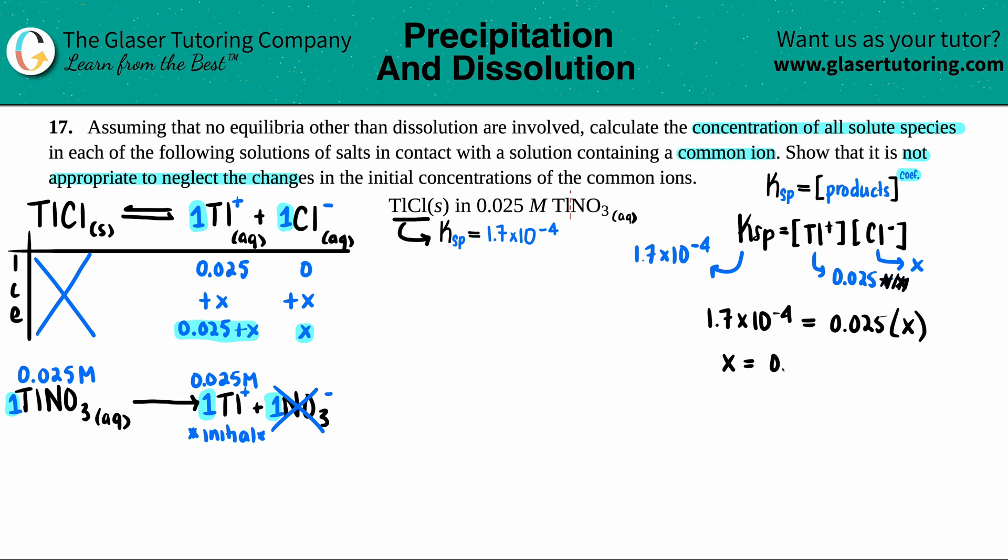Solving for x this way, we get 0.0068. Now we have to pass the five percent rule. That means if we take the answer and divide it by the initial concentration, 0.025, and times it by 100 to get the percentage, if this number is five or less we assumed correctly. But if we get higher than five percent, we have to do it again with that +x.